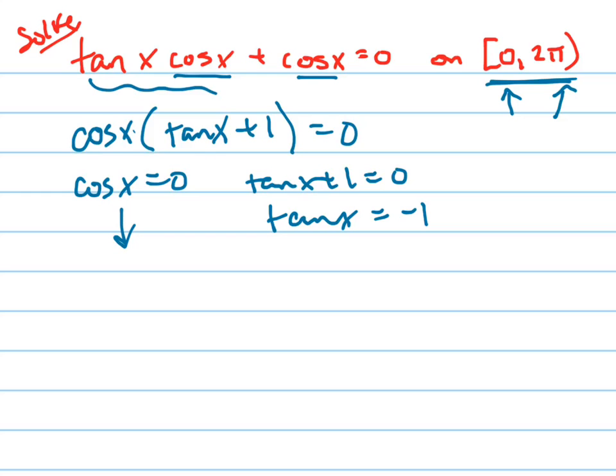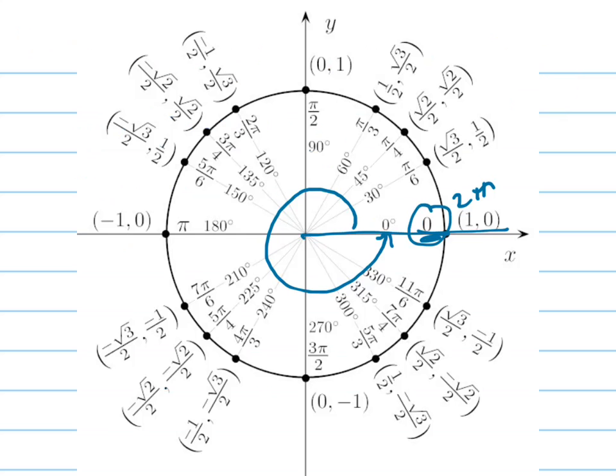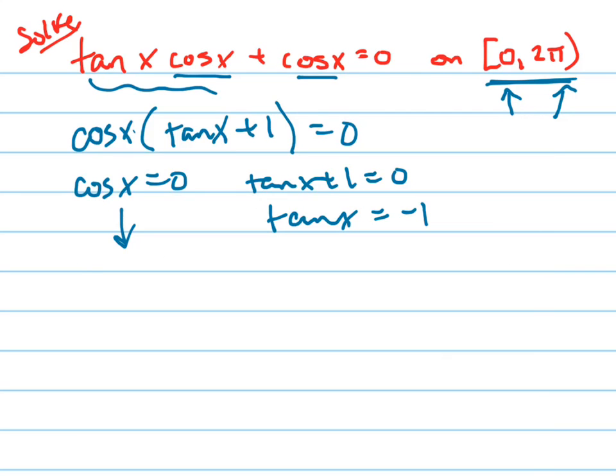So when is cosine of x equal to 0? Look at your unit circle. There and there. π over 2 and 3π over 2.